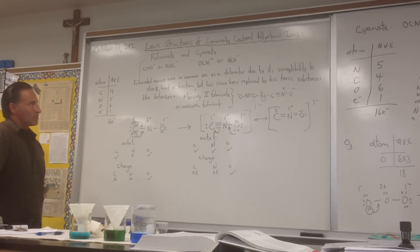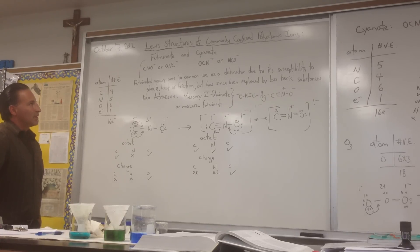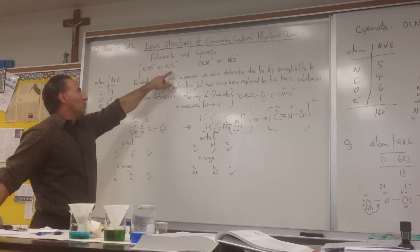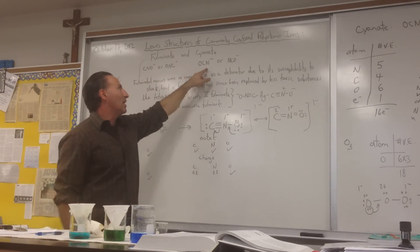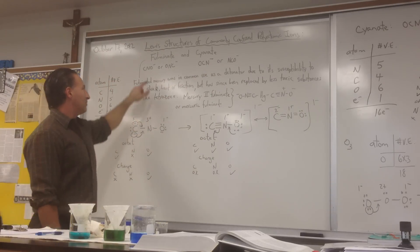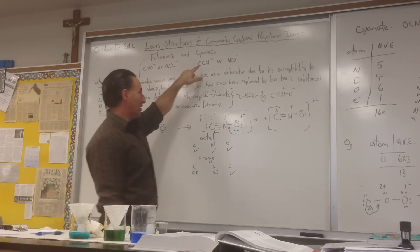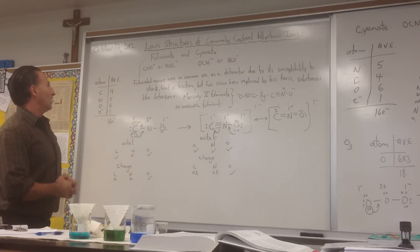In today's class we're going to discuss the Lewis structures of commonly confused polyatomic ions, fulminate and cyanate. Fulminate is often represented as CNO- or ONC- whereas cyanate is represented as OCN- or NCO-. One way of remembering it is that the fulminate ion will have the nitrogen in the middle whereas the cyanate ion will have the carbon atom in the middle.